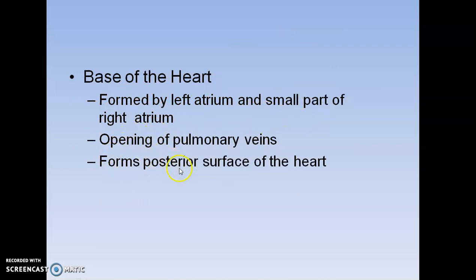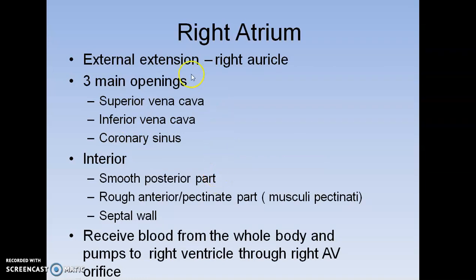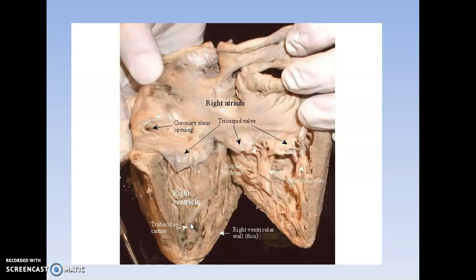The base of the heart is formed by the left atrium and a small part of the right atrium. Openings of the pulmonary veins form the posterior surface. The right atrium has external extensions called the right auricle, and three main openings: the superior vena cava, inferior vena cava, and coronary sinus. It has a smooth posterior part and a rough anterior pectinate part with septal walls. It receives deoxygenated blood from the whole body via the superior and inferior vena cava.